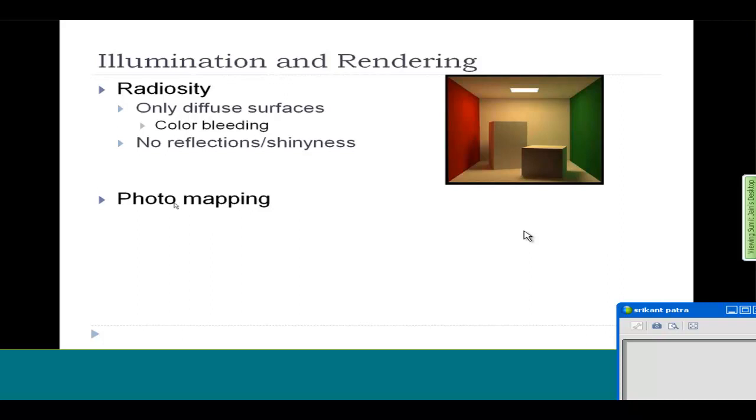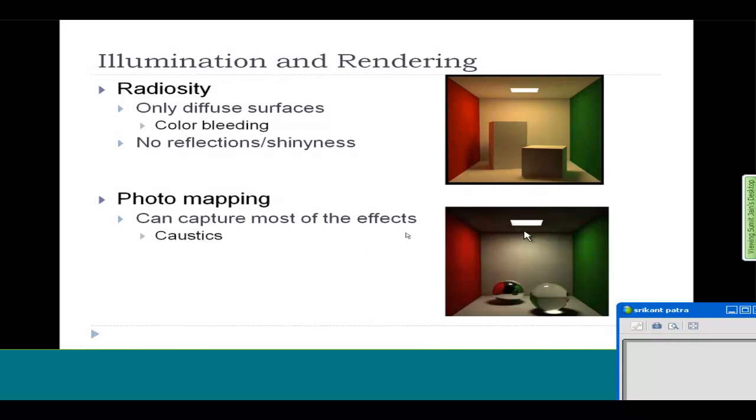There's another algorithm called photon mapping. It tries to simulate the actual physics of light and can capture many effects such as caustics. If you look at this image, you see there's a very shiny translucent ball kept here, and there's a small white refraction of light. This effect is called caustics. Even radiosity and ray tracing—none of these algorithms can generate this effect.